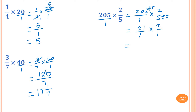So now I just multiply them. So 41 times 2: double 40 is 80, double 1 is 2, so the answer is 82. And 1 times 1 is 1. So the answer is 82 over 1, which is just 82.